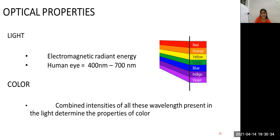Coming to optical properties. Light is electromagnetic radiant energy. Human eye is sensitive to wavelengths from about 400 nanometer to 700 nanometer. Color is a combined intensity of all these wavelengths present in the light determines the properties of the color.